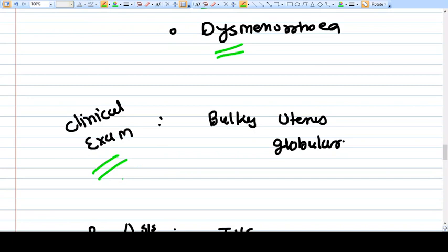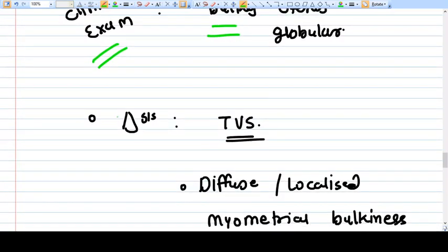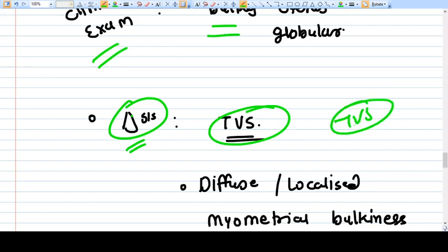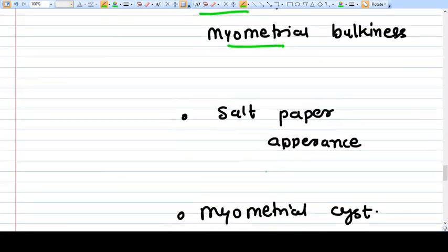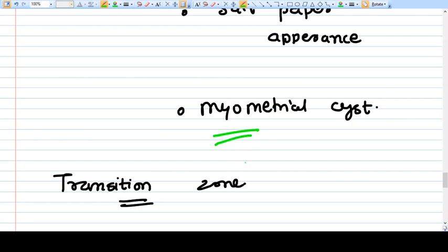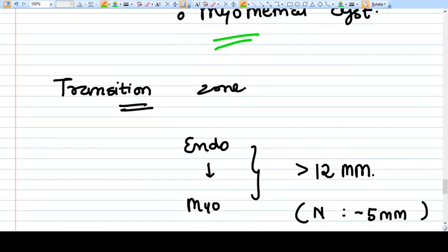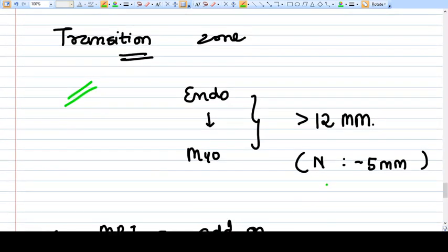On clinical examination you can identify the bulky globular uterus. How do you make the diagnosis? You do a transvaginal sonography. You must do transvaginal sonography because sometimes transabdominal sonography cannot identify adenomyosis very clearly. You will see diffuse or localized myometrial bulkiness, salt and pepper appearance, sometimes myometrial cysts also. The transition zone is the zone from endometrium to myometrium conversion.